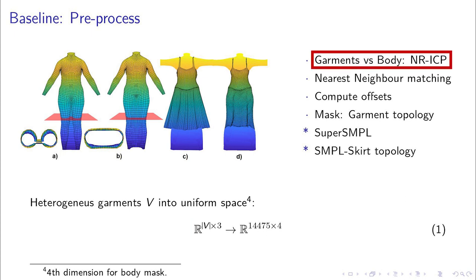Garment is registered against SMPL body, both in rest pose, using non-rigid ICP. This allows computing a more reliable matching through nearest neighbor and encoding garments as SMPL body offsets. We mask body vertices to represent garment topologies as a subset of these vertices. SMPL resolution is not enough, so we increase it and refer to it as super-SMPL.